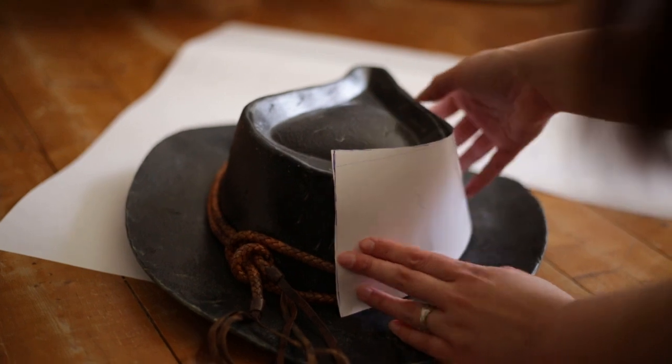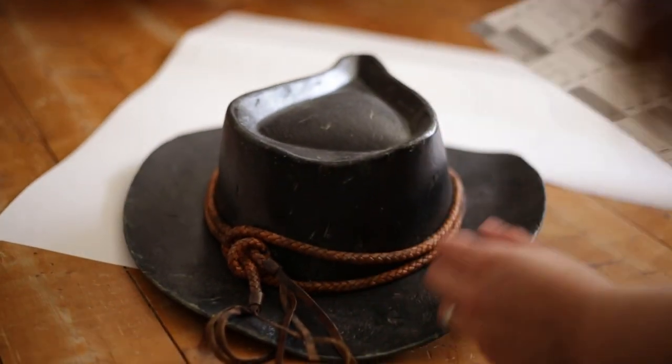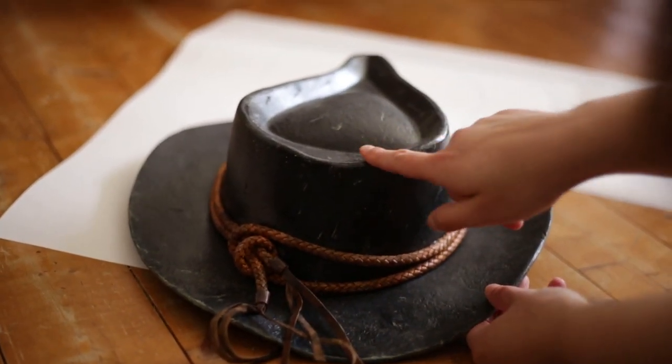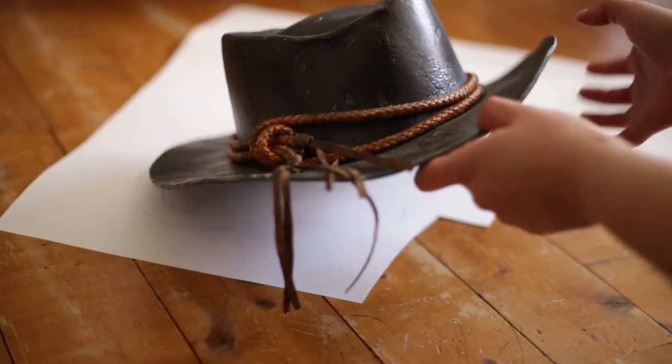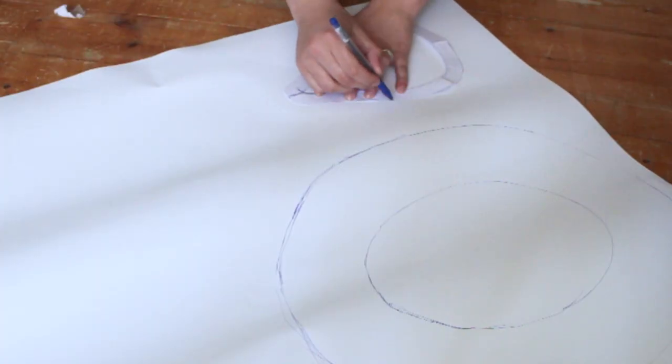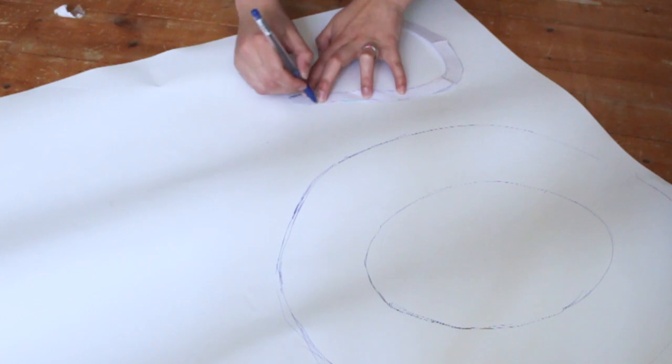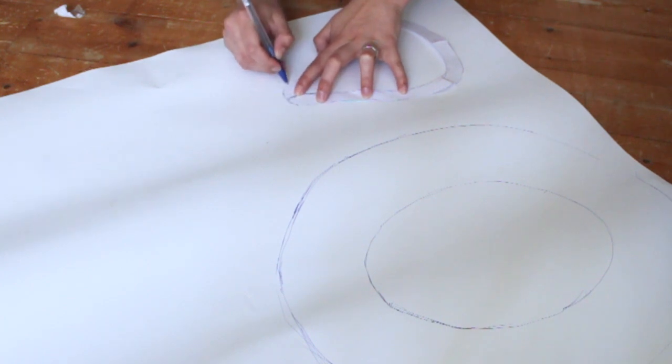I made my first version of Arthur Morgan's hat back in the beginning of 2019 so I already had a base pattern that I only had to update slightly. I traced it onto paper and I highly suggest you make yourself a paper mock-up as well. It took me quite some time to get the proportions right.